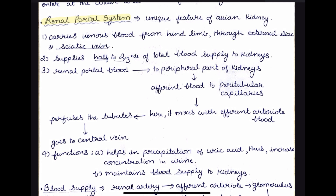The renal portal system is a very unique feature of the avian kidney. The main veins are the external iliac vein and the sciatic vein, and venous blood comes from the hind limb through these two veins. It supplies two-thirds of the total blood supply to the kidney. The renal portal blood comes to the peripheral part of the kidney, supplies blood to the peritubular capillaries, mixes with afferent arterial blood, perfuses the tubules, and then goes to the central vein.